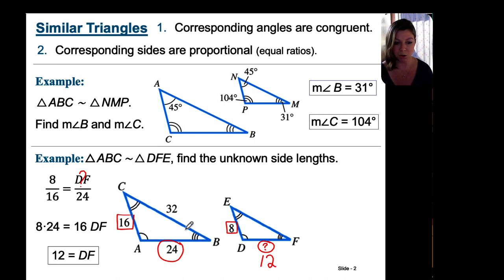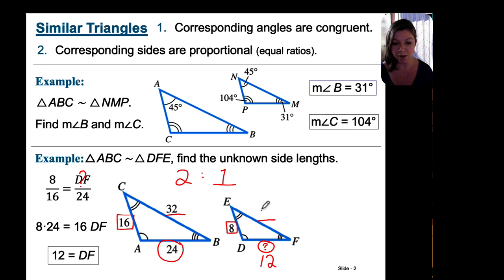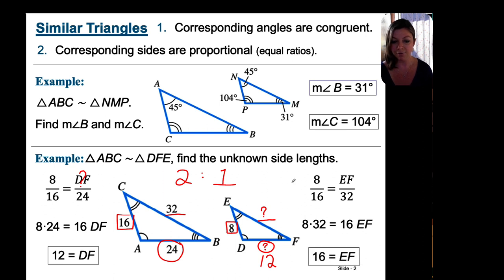There's a 2-to-1 ratio: for every 2 units in the large triangle, there is 1 unit in the small triangle. Writing the proportion once more to find EF: 8 is to 16 as EF is to 32. Cross-multiplying and isolating EF gives us 16 linear units for this longest side — confirming the 2-to-1 ratio: 2 units in the large triangle equal 1 unit in the small.